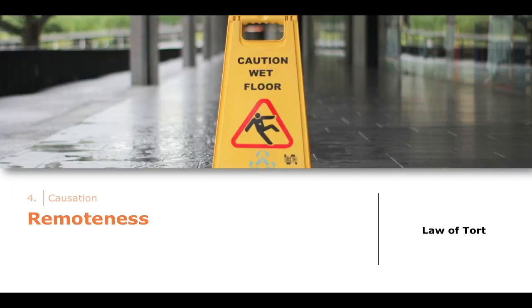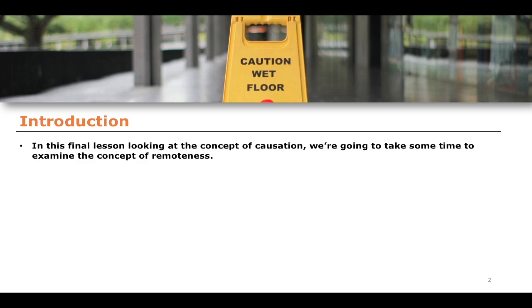Welcome back everybody to the Law of Tort, specifically talking about the concept of causation. This lesson is going to focus on the idea of remoteness. We'll illustrate what remoteness essentially means when looking at a couple of cases, rounding off our conversation about causation. Causation has been the remit of a number of different lessons, and we're going to finish off by talking about remoteness in its final aspects, before starting to talk about other torts relevant to law students in the United Kingdom — employer's liability, vicarious liability, occupier's liability, nuisance, and defamation.